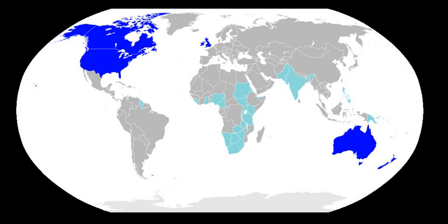Unlike Icelandic or Faroese, the long history of invasions of the British Isles by other peoples and languages, particularly Old Norse and Norman French, left a profound mark on the language, such that English shares substantial vocabulary and grammar similarities with many languages outside its linguistic clades, while also being unintelligible with any of those languages. Some scholars have even argued that English can be considered a mixed language or a creole — a theory called the Middle English Creole hypothesis. English is classified as a Germanic language because it shares innovations with other Germanic languages such as Dutch, German, and Swedish.